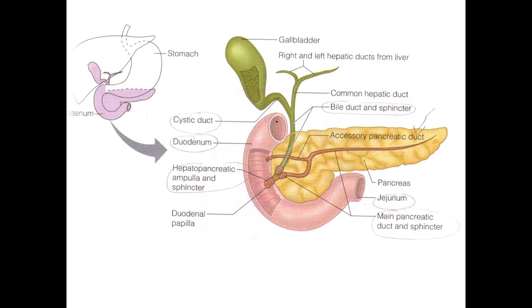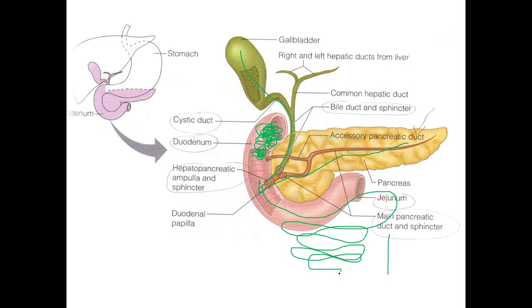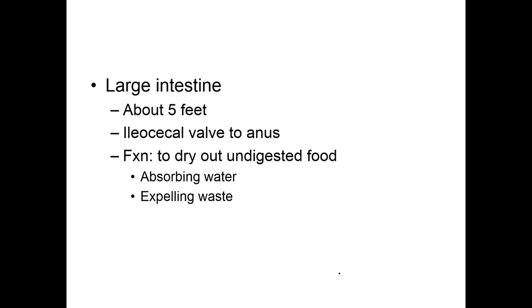The presence of chyme in the duodenum stimulates the gallbladder to release bile and stimulates the pancreas to release pancreatic juices. The chyme continues through the small intestine as the body absorbs nutrients, then eventually reaches the large intestine, which is about five feet in length. The large intestine's job is to dry out undigested food — it's the body's last chance to absorb water — and then expel waste.